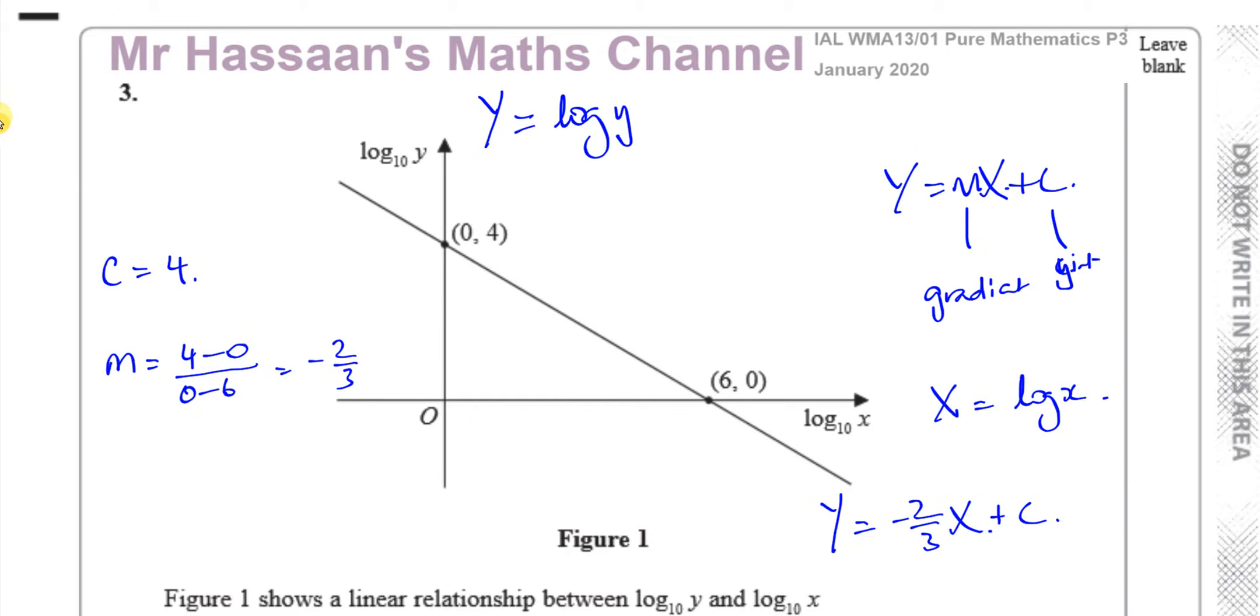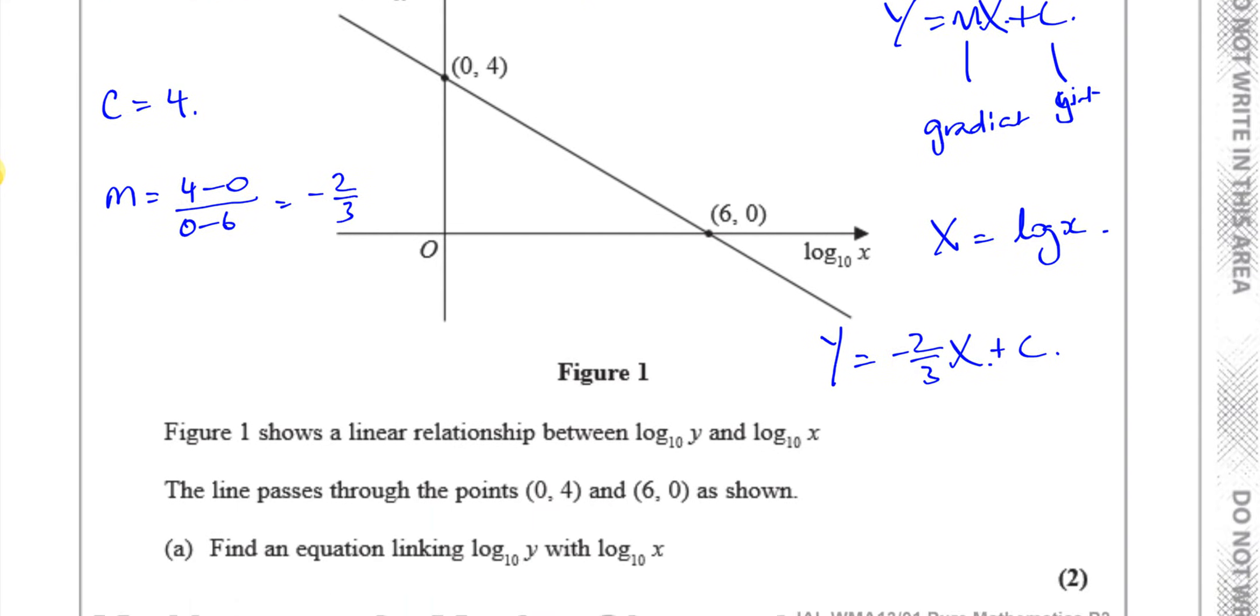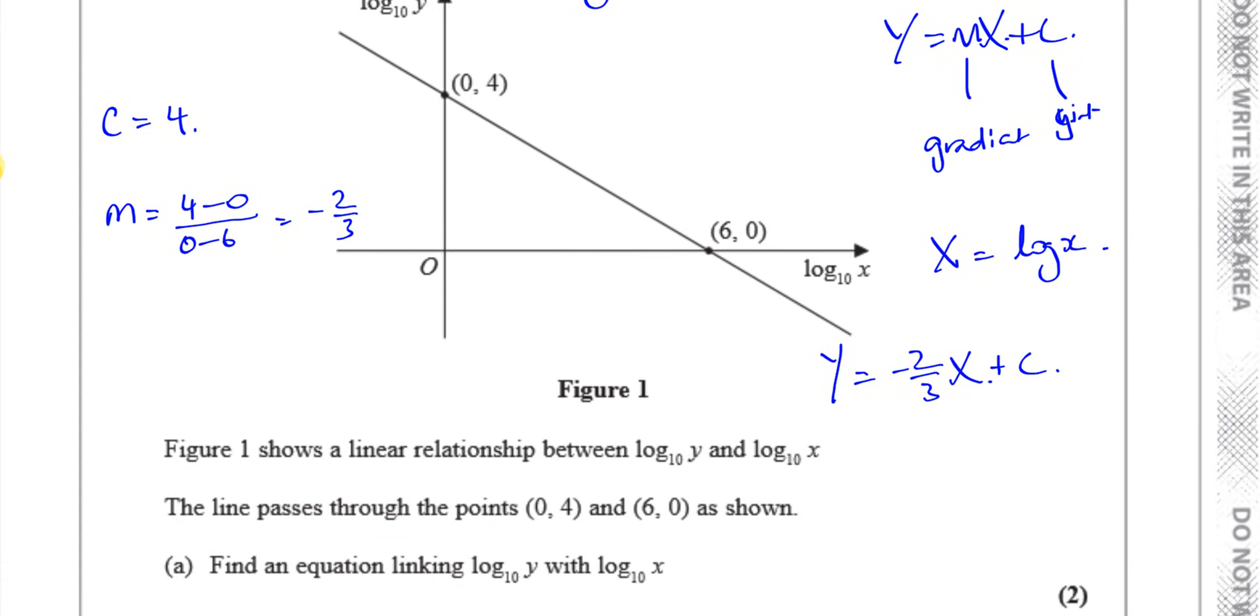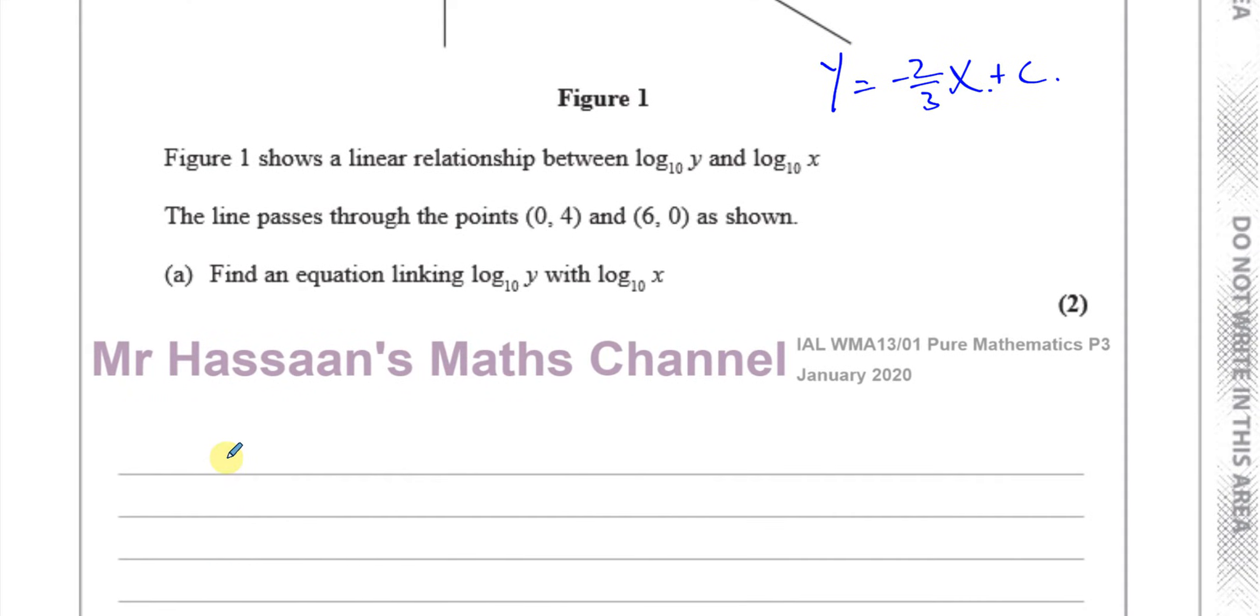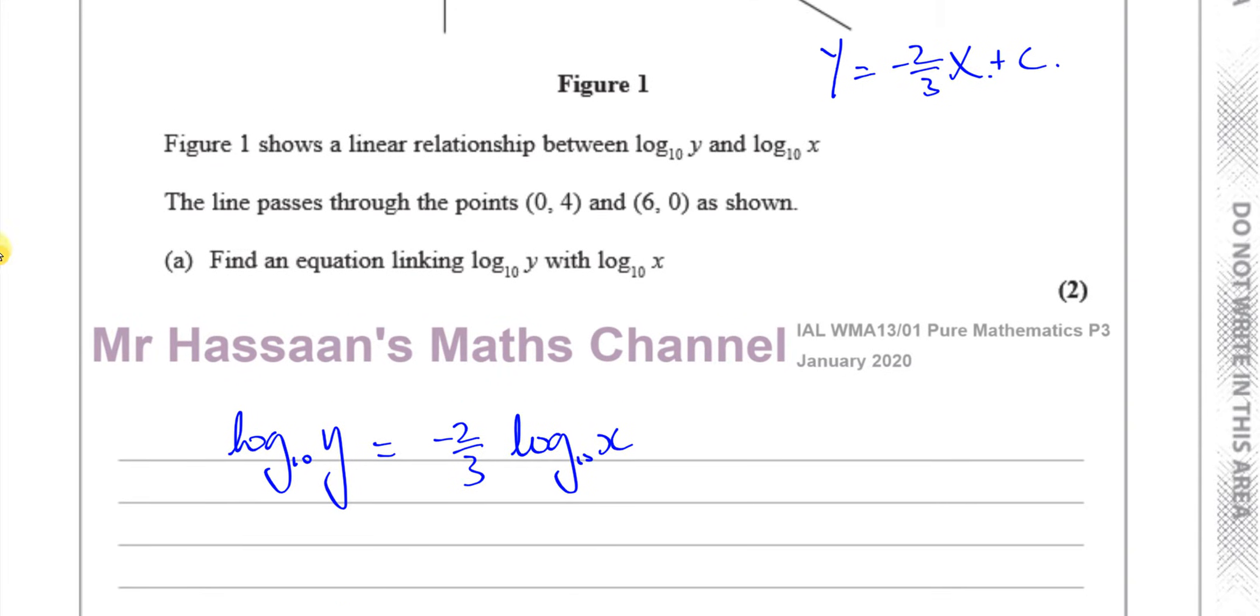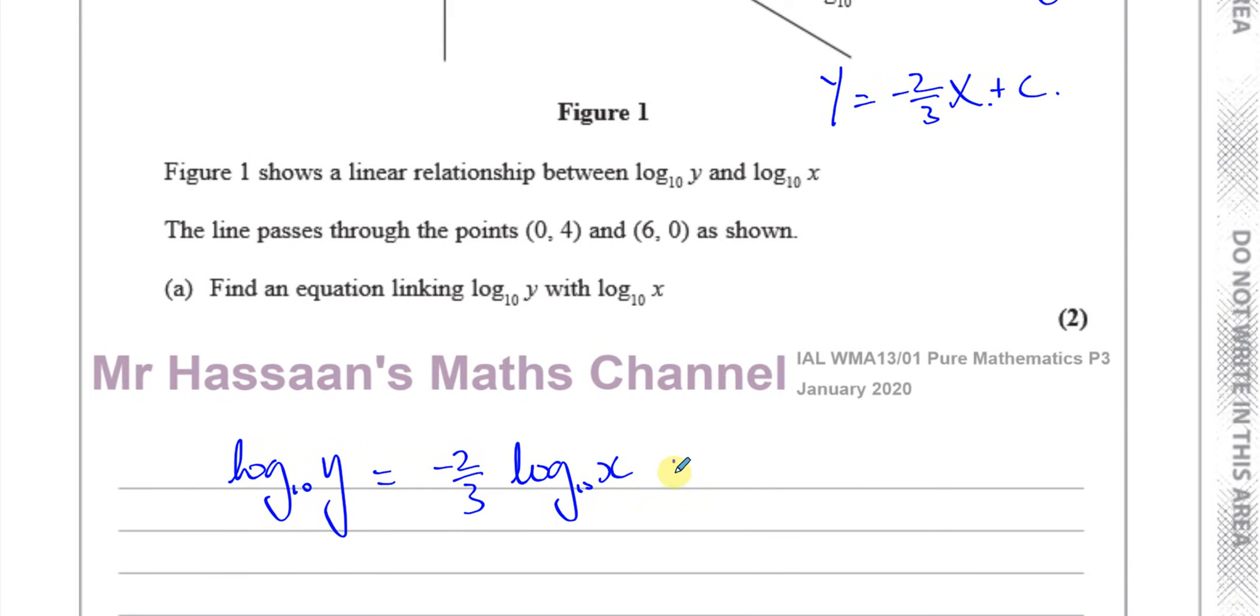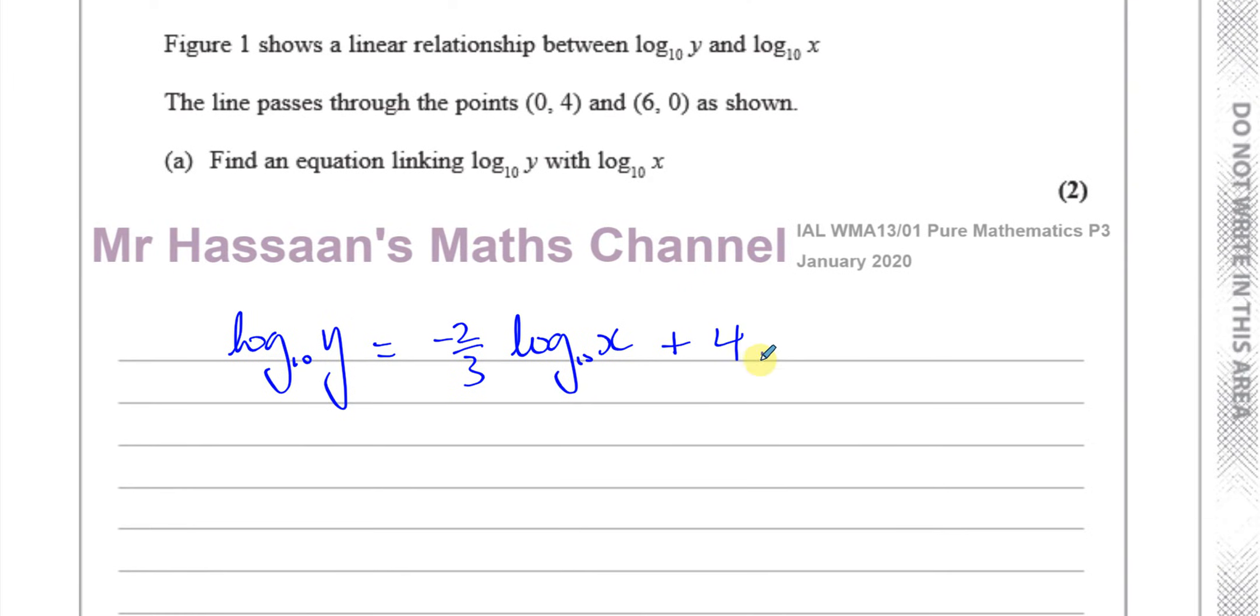Basically, here we can see that our capital Y is log to the base 10 of y, and our capital X is log to the base 10 of x. You don't have to write the base 10 because log means base 10. They've written it here, but you don't actually need to write it. So what we can do is, we can say that log to the base 10 of y is equal to the gradient, which we found was minus 2 thirds times log to the base 10 of x plus c, which was plus 4.